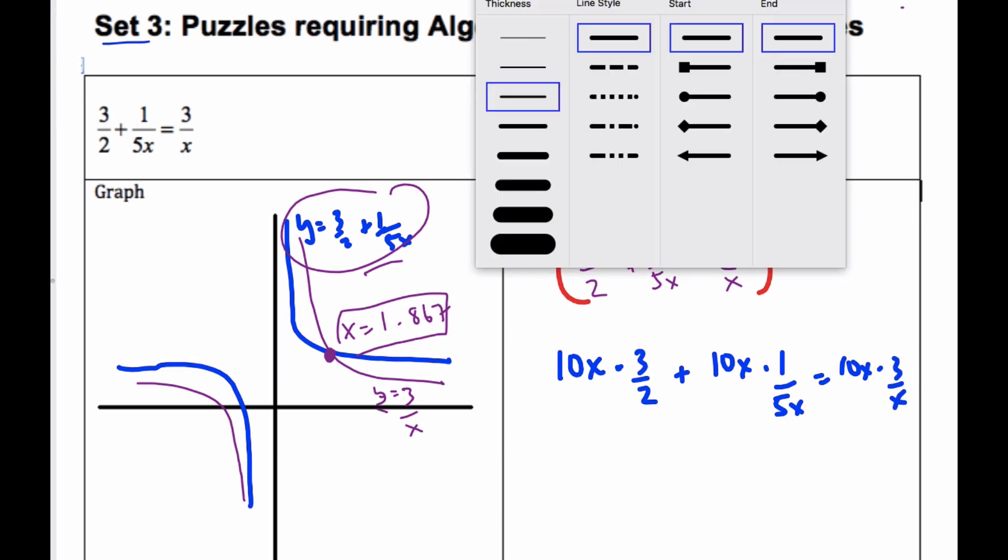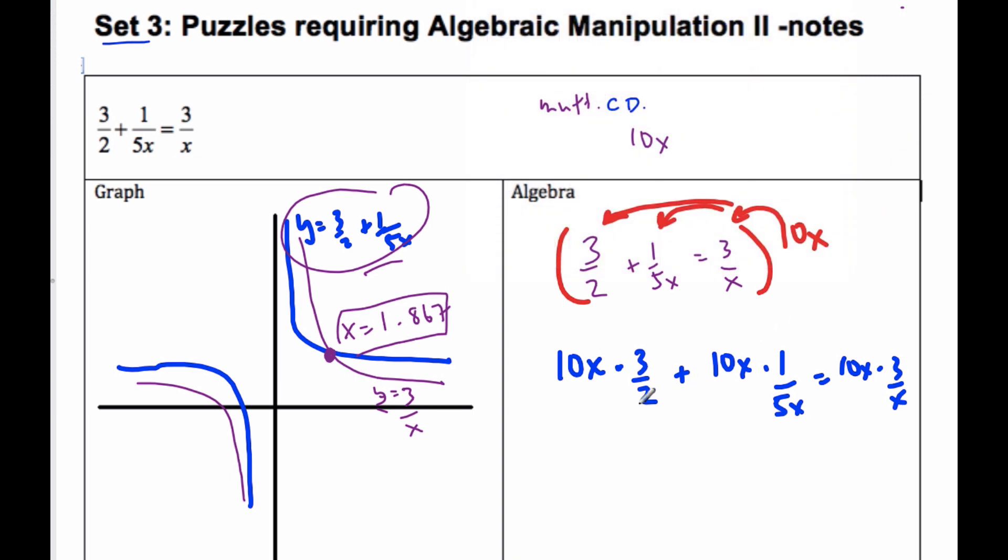And then what I can do is, I can come along and I can simplify. And here it makes this a 5. The 5x and the 10x makes this a 2, because the x and the x cancels, 10 divided by 5 is 2, and the x and the x cancel. And so then I end up with 5x times 3 is 15x plus 2 equals 30.